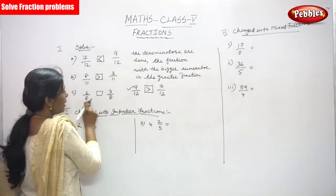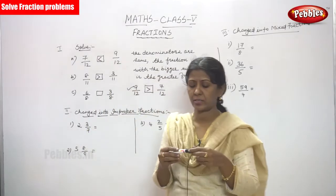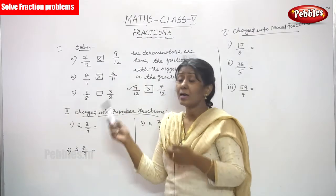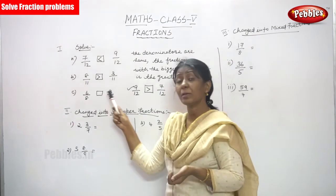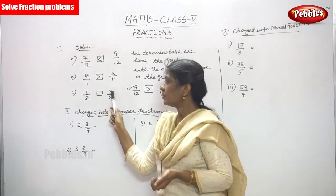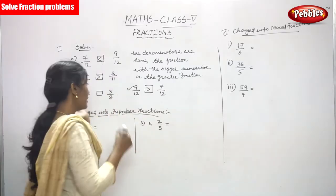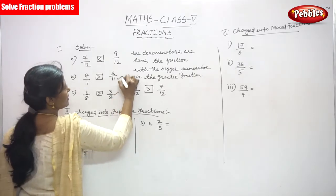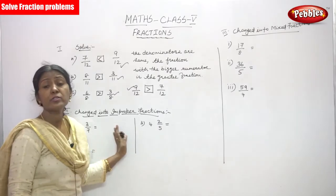Next sum: 6 by 8 and 3 by 8. The denominators are the same, so it is a like fraction. For a like fraction you look at only the numerator. The fraction with the bigger numerator — 6 is bigger than 3 — so 6 by 8 is the greater fraction. 6 by 8 is greater than 3 by 8. That is the exact answer for this question.